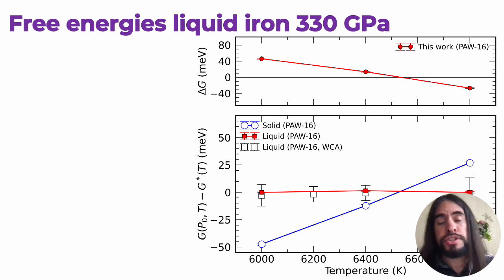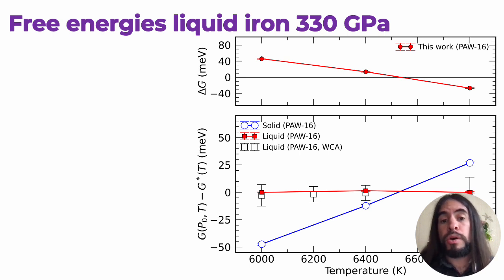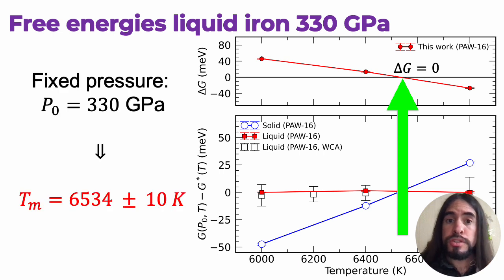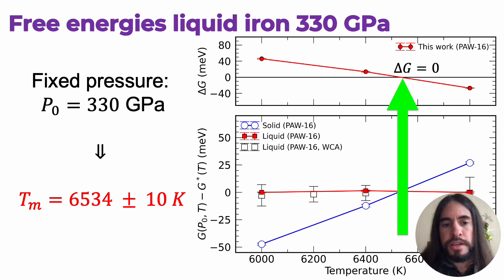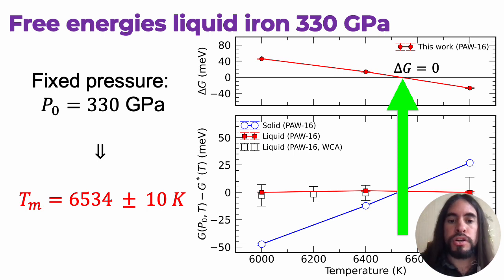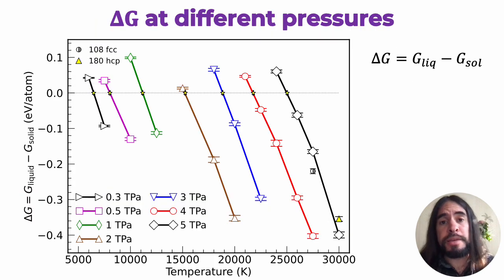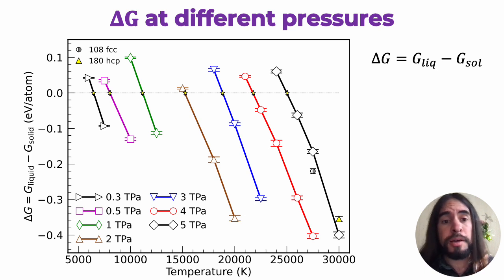We repeat the same procedure at different temperatures for both the solid and the liquid, calculate the differences in Gibbs free energy, and look for the intersection with zero where the liquid and solid have the same free energy. As you can see, the transition occurs at 300 GPa at 6500 kelvin, which is our prediction for the melting temperature of iron at this pressure, and both methods for the liquid provide exactly the same Gibbs free energy within the error bars. We then repeat the same procedure for other pressures, from 0.3 to 5 terapascals, where the dependence of ΔG with temperature is pretty linear and the intersections with zero give us the melting points.